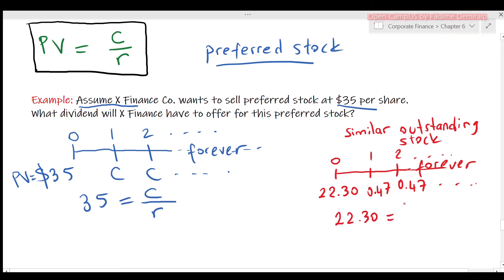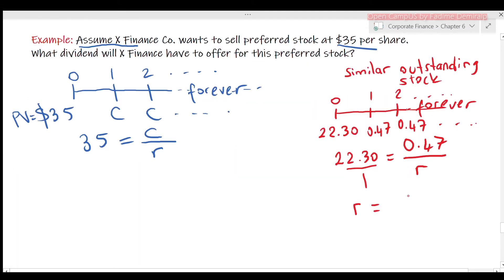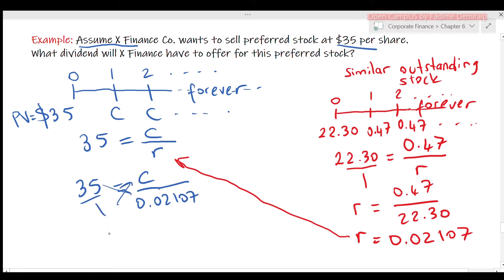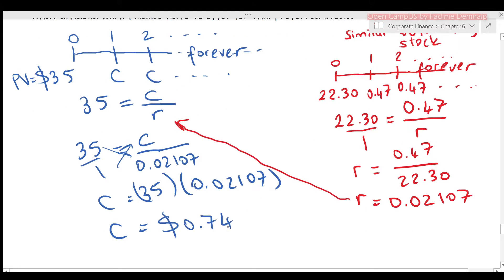Present value equals fixed payment 0.47 divided by R. Cross-multiplying, R equals 0.47 divided by 22.3, giving R = 0.02107. Coming back to the original question using this period rate: 35 equals C divided by 0.02107, so C equals 35 times 0.02107, which is 74 cents. This is the dividend the finance company has to offer for the preferred stock.